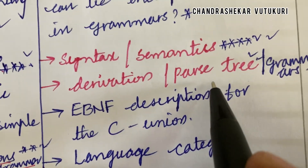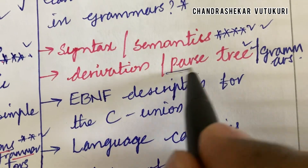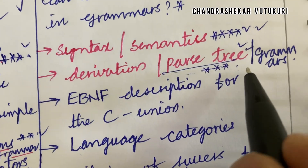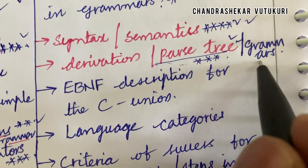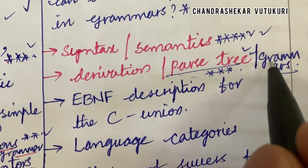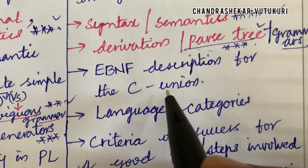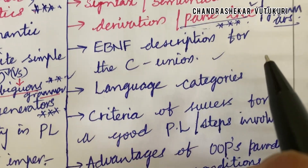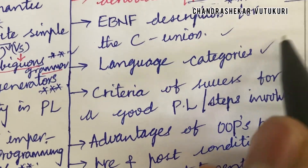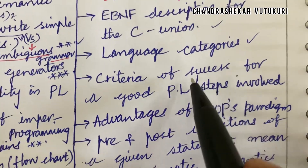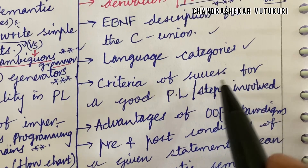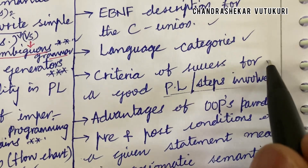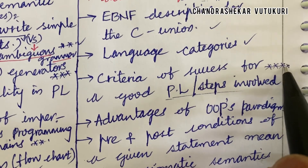Derivation and parse tree — related to parse trees you are supposed to write a program — said to be a 2-mark or 5-mark question. Grammars, their differences and definitions. Description for C union is a short question. Language categories is a short question. Criteria of success for a good programming language and the steps involved is said to be a long question.